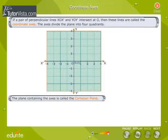The plane containing the axes is called the Cartesian plane. The axes divide the Cartesian plane into four quadrants.